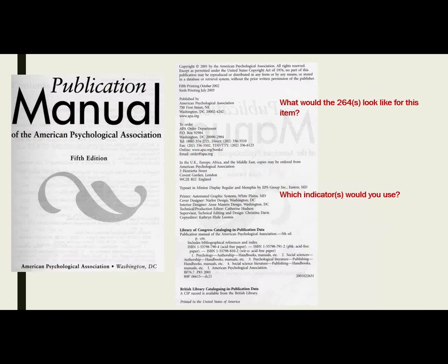Now I'm going to make you participate a little and look at these examples and tell me what the subfields would be. In this example, what would subfield A be? That's correct — Washington, D.C. What's your B going to look like? Very good — the American Psychological Association.